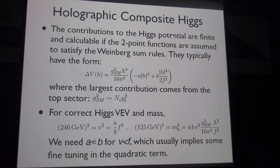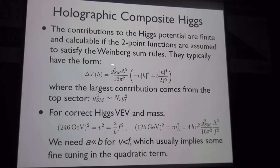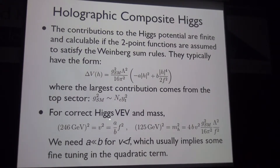The contributions to the Higgs potential are finite and calculable if the two-point functions satisfy Weinberg sum rules analogous to those in QCD. The potential takes the form of a quadratic term and a quartic term. To get the correct Higgs VEV, one needs V²/F² = A/B to equal the right value, which requires A to be much smaller than B — an unavoidable tuning.